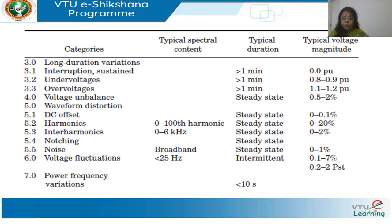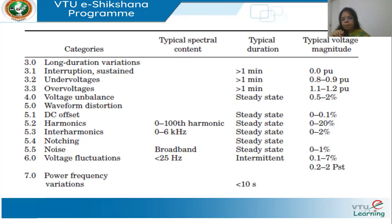Then we have voltage fluctuations — flicker — which can occur intermittently whenever welding equipment is on. And power frequency variations, which last less than 10 seconds, because the load frequency controllers come into action quickly and rectify the mismatch between generation and demand.